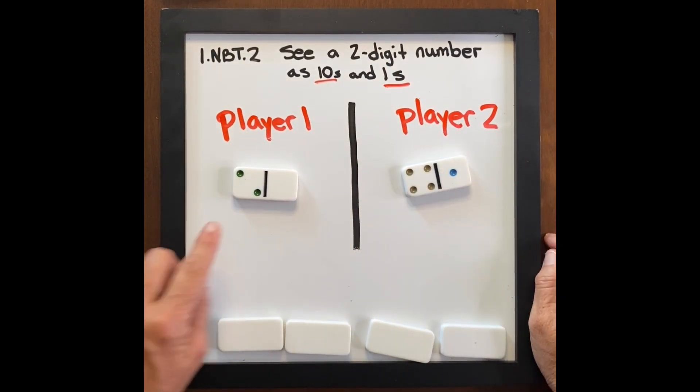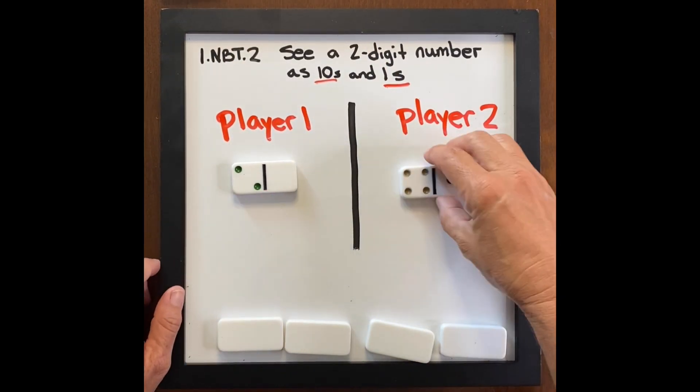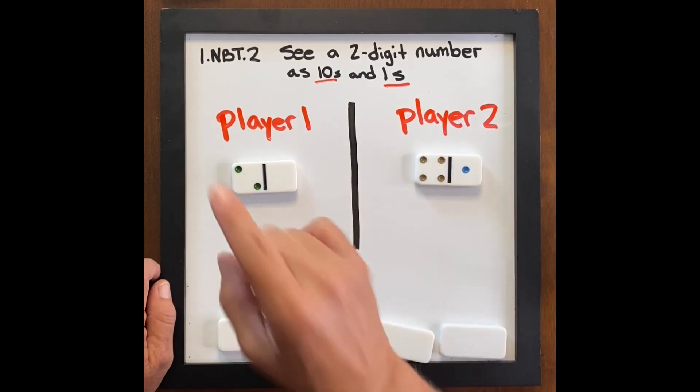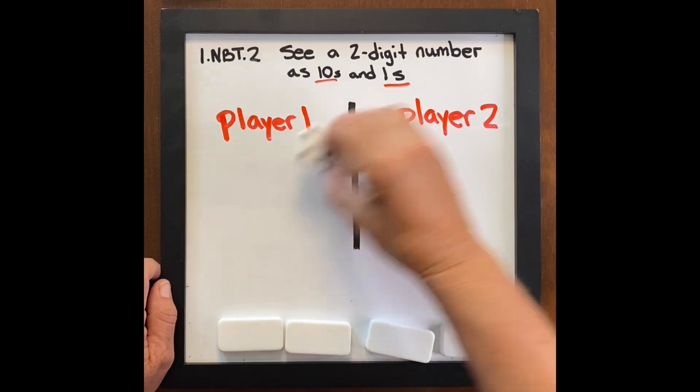Do it again. Turn it over. Their biggest number is 20. Their biggest number is 40. 41 is greater than 20. Player two wins.